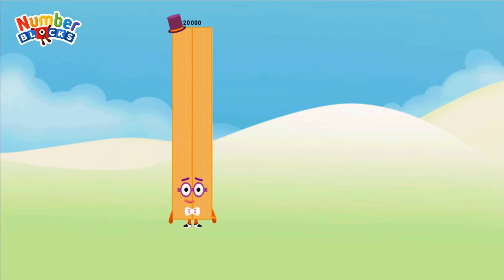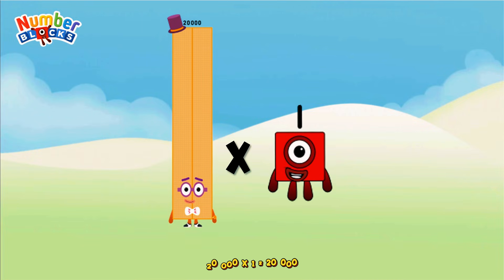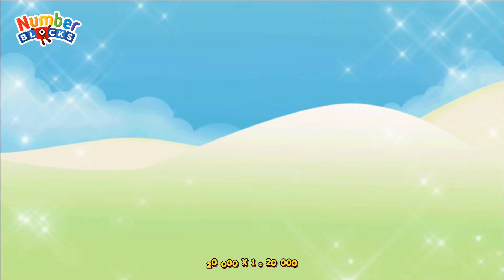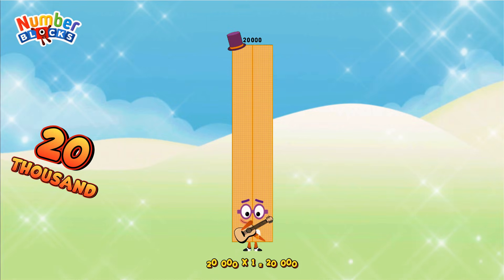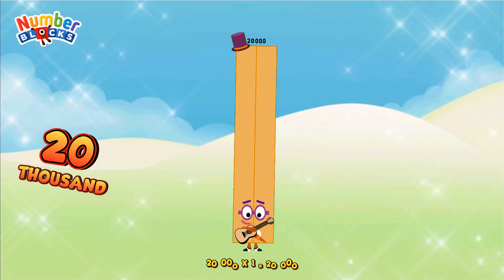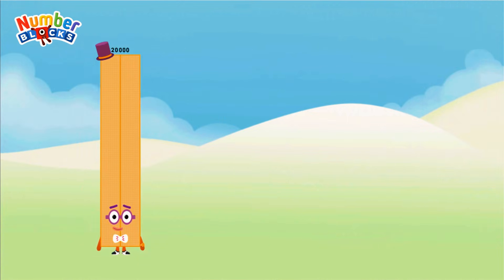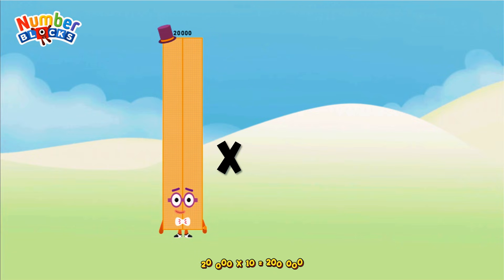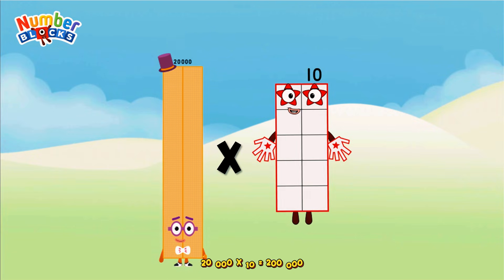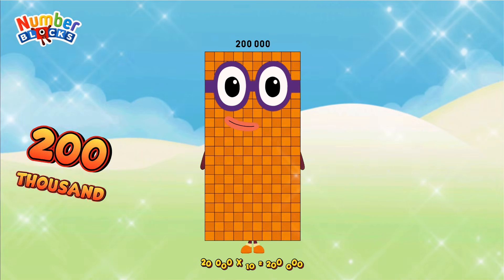20,000 times 1 equals 20,000. 20,000 times 10 equals 200,000.